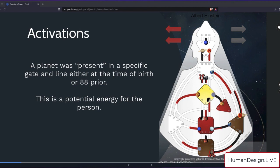Remember activations, or what is most important to understand about activations? Here we have on this chart all of the planets sprinkled throughout the body graph. If you have never done this, I highly recommend it, because these planets, wherever they happen to be, were present, alive, activating, turning on, imprinting that specific gate and line either at the time of birth or 88 degrees prior.